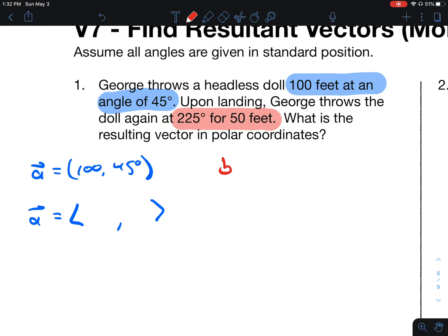And then we have vector B, this red one. It is 50 feet at 225 degrees. We would like that also in component form.